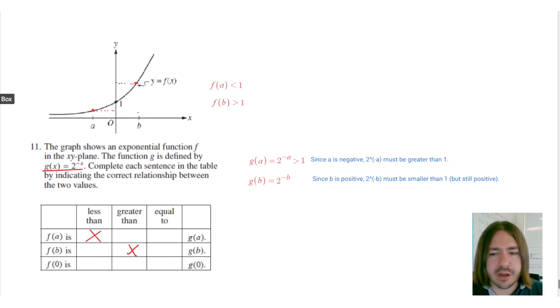And finally, f of 0. So f of 0 here equals 1. You can just clearly see that on the graph. And then, so g of 0 would be what we get if we substitute 0 in for x. So that would be 2 to the power of negative 0.